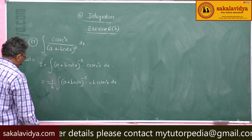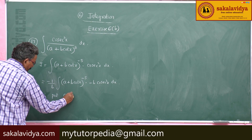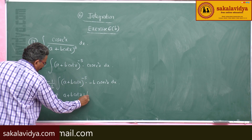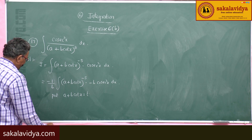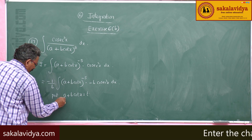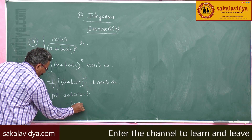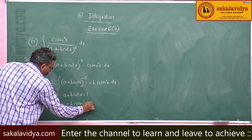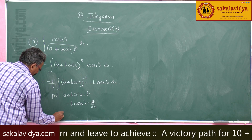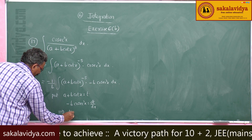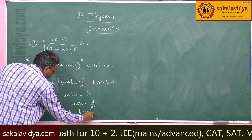Let us put a plus b·cot x equal to t, and differentiate both sides with respect to x. The derivative of the constant a is 0, and the derivative of b·cot x gives minus b·cosecant squared x, equal to dt/dx. So, dt equals minus b·cosecant squared x dx.